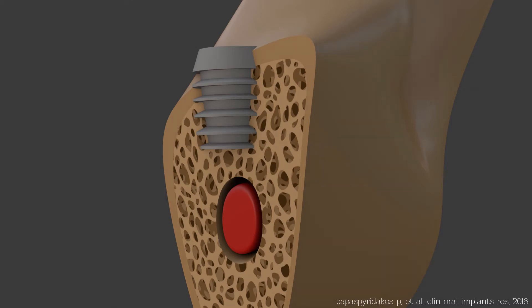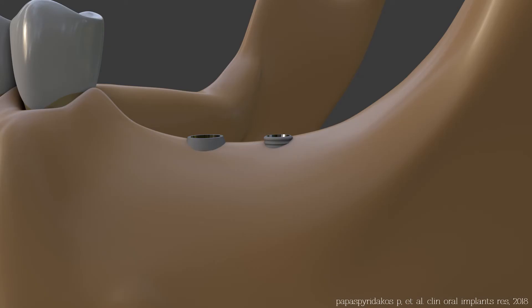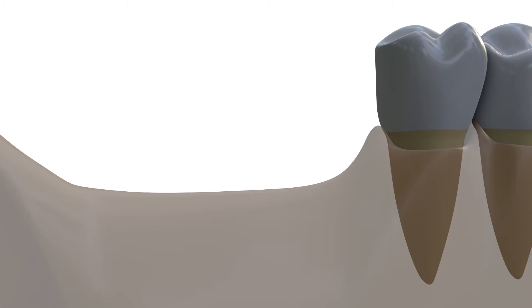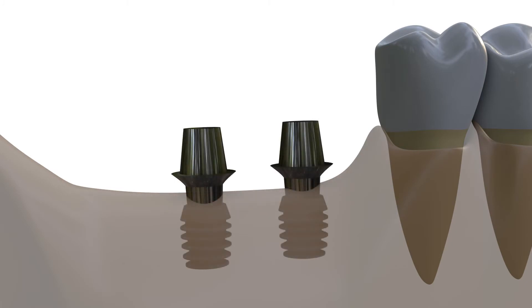On the other hand, some important disadvantages cannot be overlooked. Since the implant is short, the amount of the threads is less and when bone resorption occurs in time, the survival rate decreases. Although their survival rates are similar to standard implants, the risk ratio is 1.3 when short implants are used.